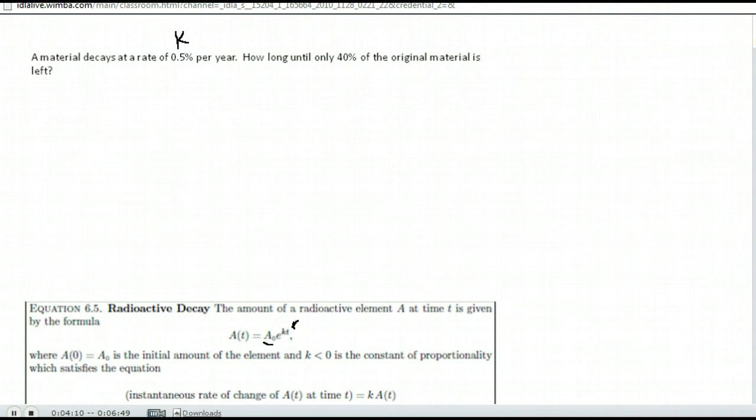All they told us is that they wanted only 40% of the original material left. Well, notice 40% of something. You can find that by multiplying by 0.4. So our original amount is A naught, e to the negative point. Make sure you put your decimal, okay, rather than a percent, so 0.005. We don't know the time t, but we know in the end we want to end up with 0.4 of our original amount or 40% of the original amount.